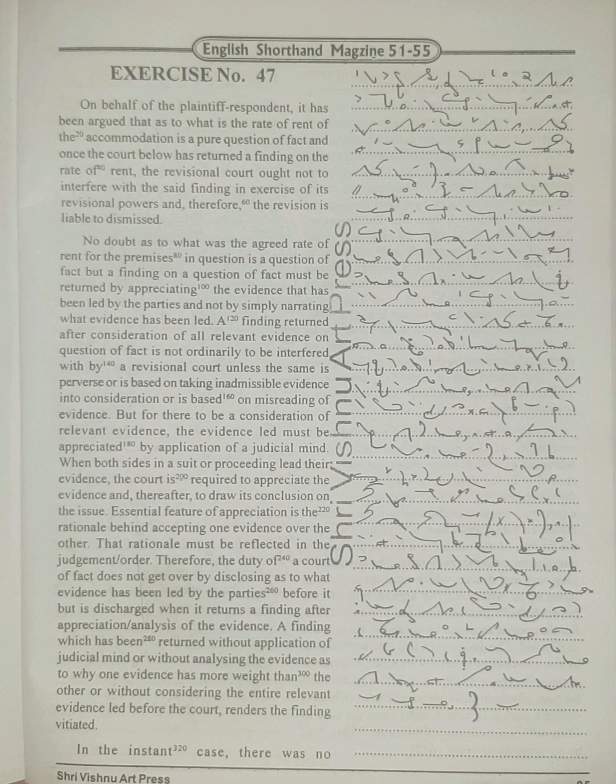But for there to be a consideration of relevant evidence, the evidence led must be appreciated by application of a judicial mind. When both sides in a suit or proceeding lead their evidence, the court is required to appreciate the evidence and thereafter to draw its conclusion on the issue. Essential feature of appreciation is the rationale behind accepting one evidence over the other. That rationale must be reflected in the judgment order.